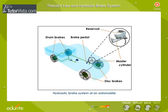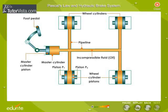Here you can see the hydraulic brake system of an automobile. It consists of a pipeline containing fluid, one end of which is connected to the master cylinder fitted with a piston attached to the foot pedal. The other end of the pipeline is connected to the wheel cylinder, having two pistons P1 and P2, attached to the brake shoes. The area of cross-section of the wheel cylinder is greater than the area of the cross-section of the master cylinder.